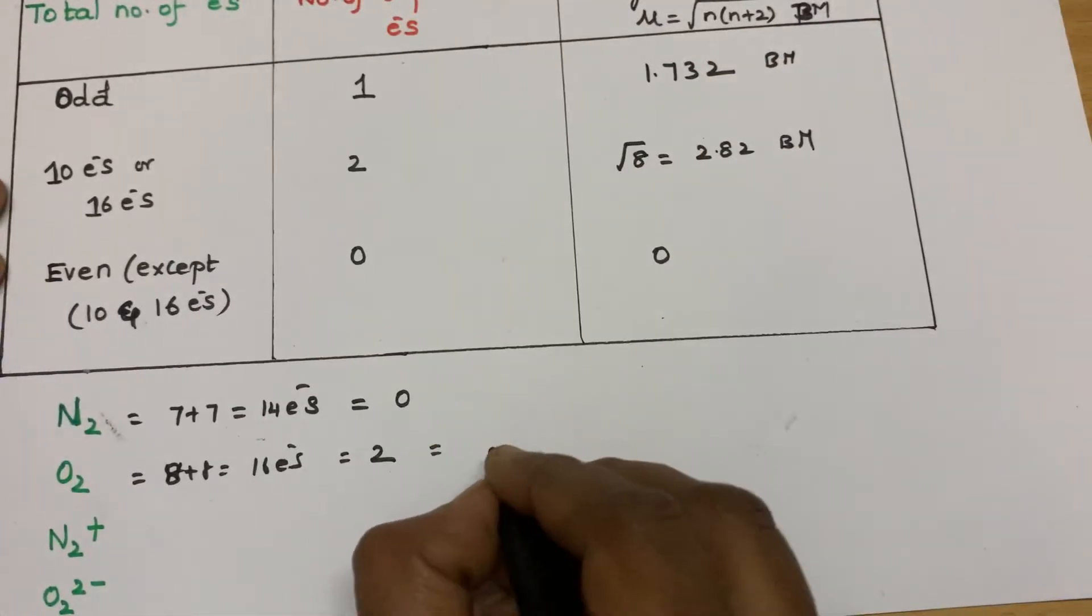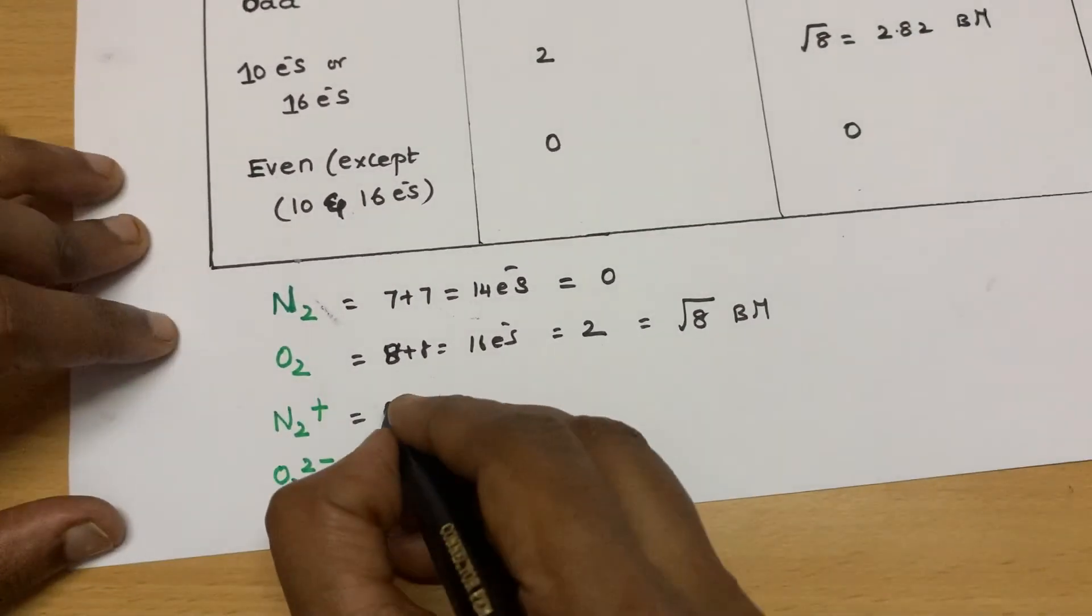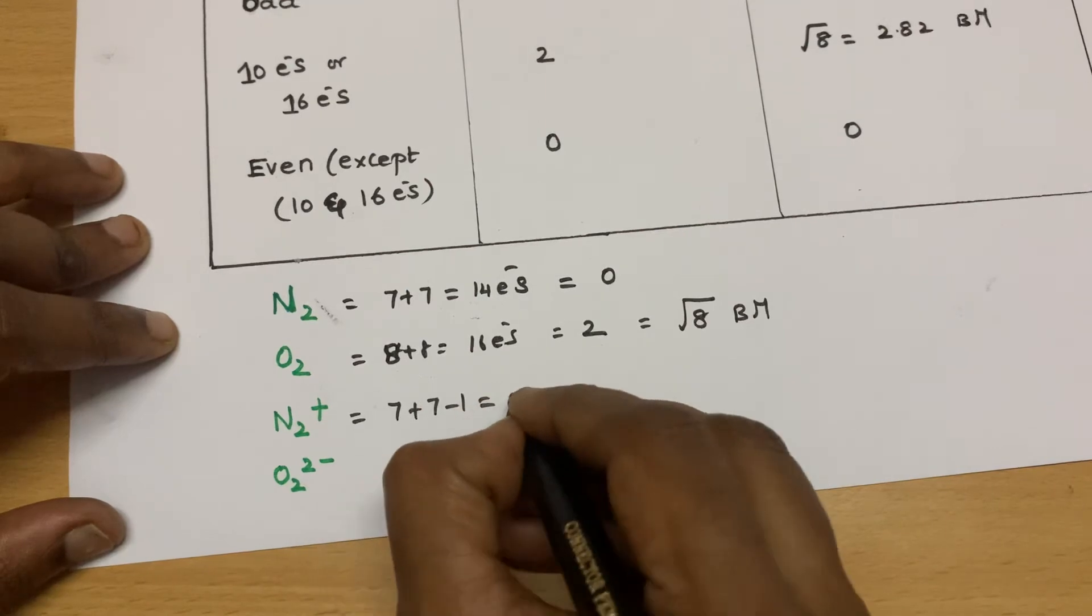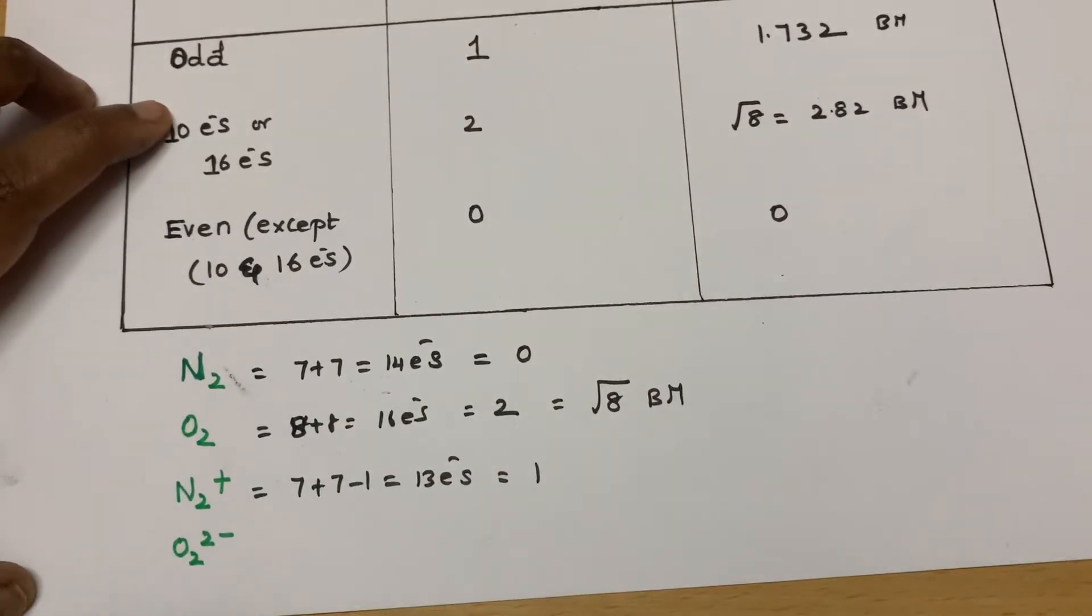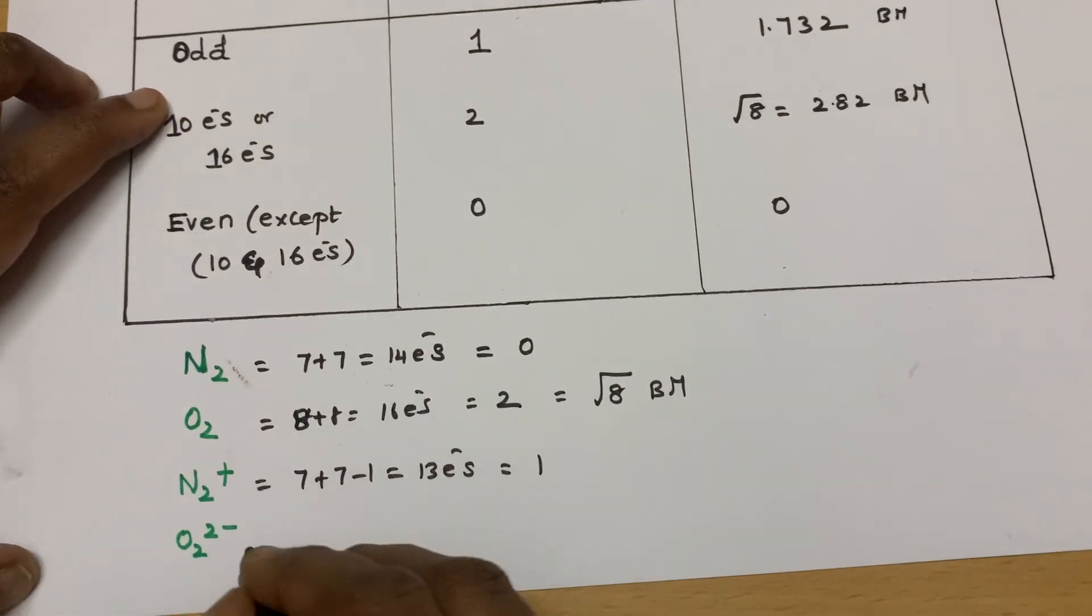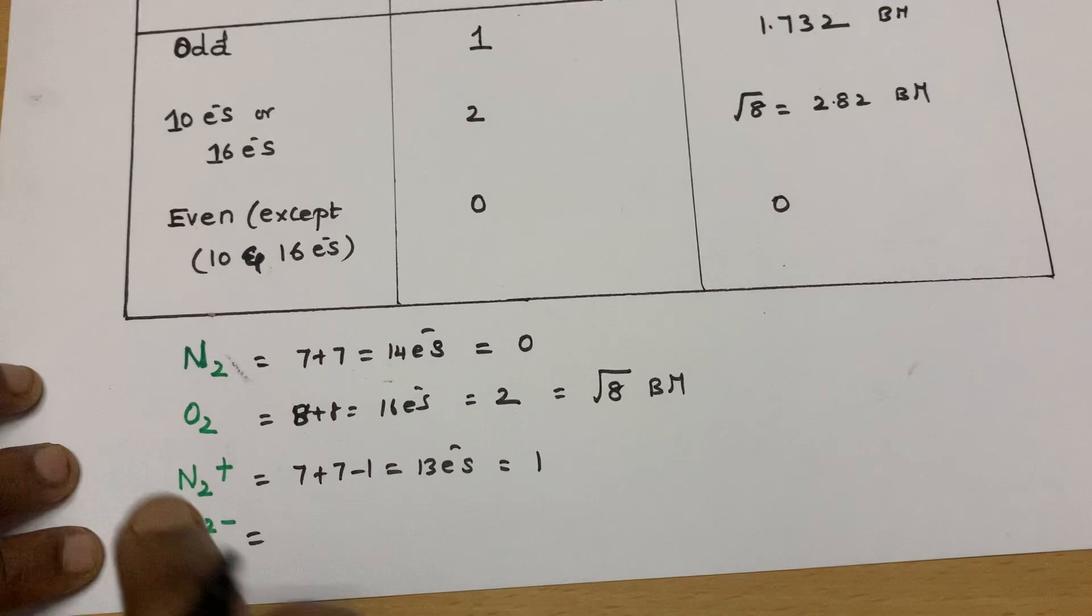So its magnetic moment will be root 8 Bohr magneton. For N2 plus, 7 plus 7 minus 1 is equal to 13 electrons. So it comes to be odd. So it will have 1 unpaired electron. You can check in that sequence, you can add electrons and check.